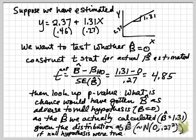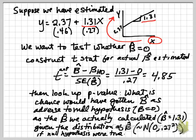Suppose we've estimated a regression relationship where we have an x variable explaining some outcome variable y, and we've estimated y equals 2.37 plus 1.31x. So every additional unit of x is associated with a 1.31 increase in y — that's the slope. We want to test whether this β̂ of 1.31 is different from 0, with a null hypothesis that it equals 0. Given the sample, is 1.31 statistically significantly different from 0?